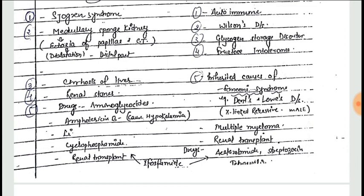The causes of Type 2 renal tubular acidosis include autoimmune disease, Wilson's disease, glycogen storage disease, fructose intolerance, inherited causes like Fanconi syndrome, multiple myeloma, renal transplant, and drugs like acetazolamide.